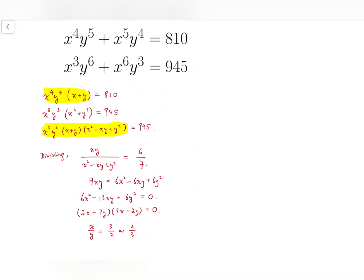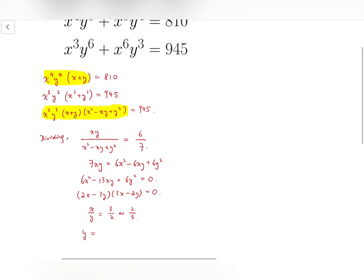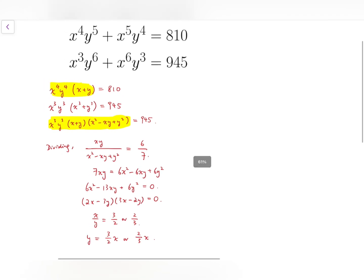So I've got the ratio between x and y. Now, to solve for x and y, I'm going to rewrite that as y equals either 3 over 2x or 2 over 3x. So let's divide it into cases.